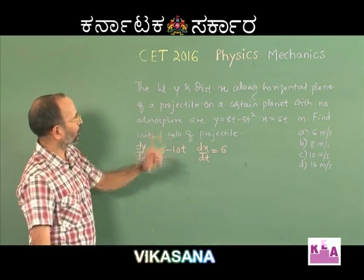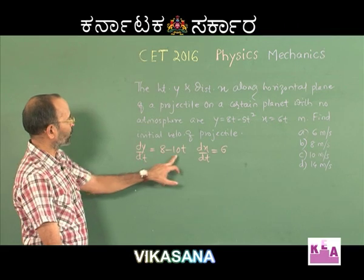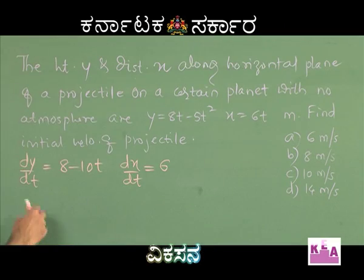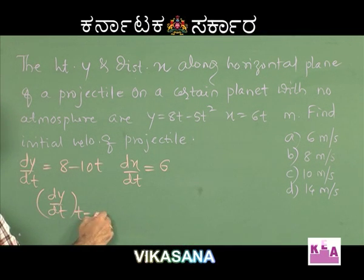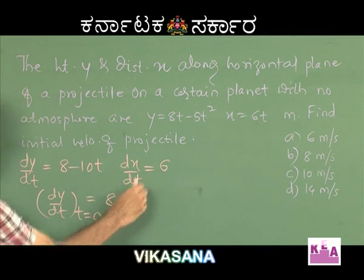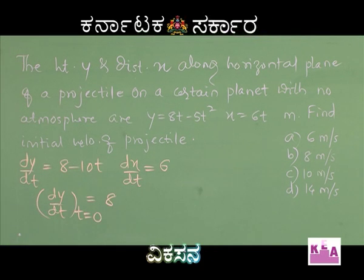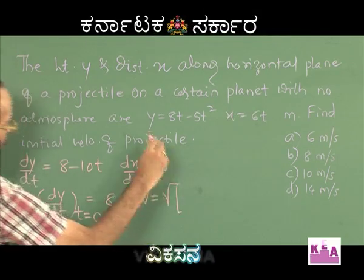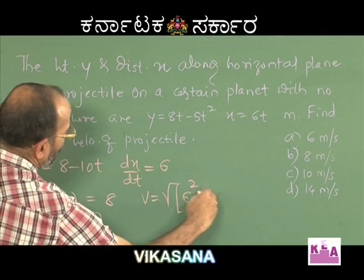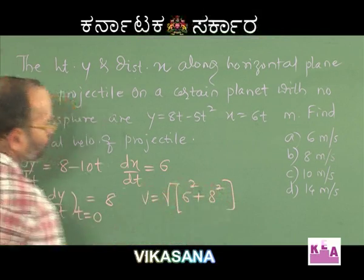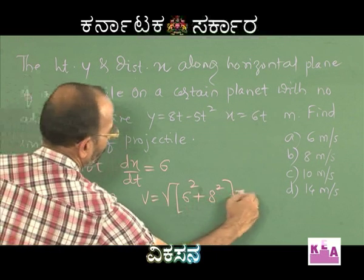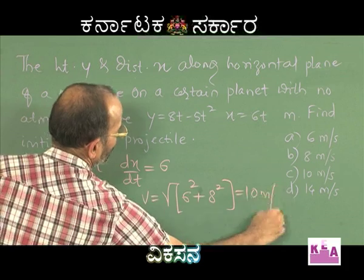Because we need the initial velocity of the projectile, we substitute t equal to 0 in the expression for dy/dt. We get dy/dt at t equal to 0 as 8, and dx/dt is constant which equals 6. That makes the initial speed of the projectile the square root of 6 squared plus 8 squared, which is the square root of 36 plus 64, which is the square root of 100.